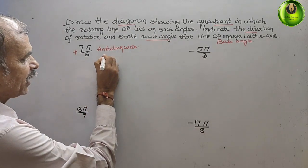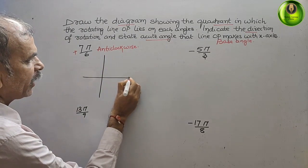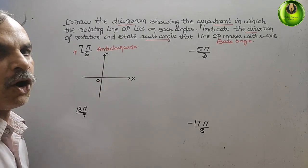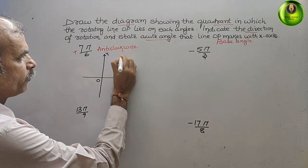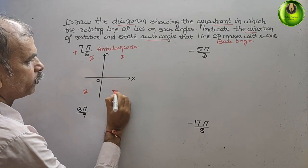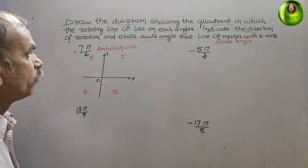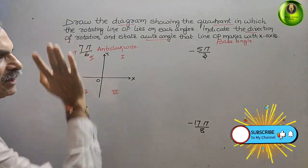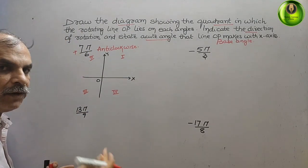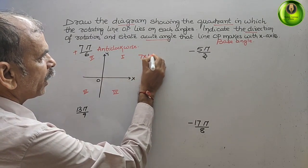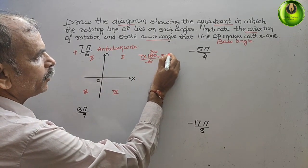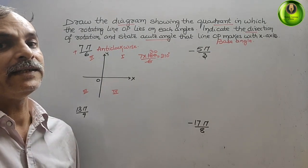The diagram has a y-axis, x-axis, and origin O. We name the quadrants: first, second, third, and fourth. Now, 7π/6 — since π means 180°, we calculate 7 × 180 / 6, which gives us 210°. So it is 210°, which is positive.